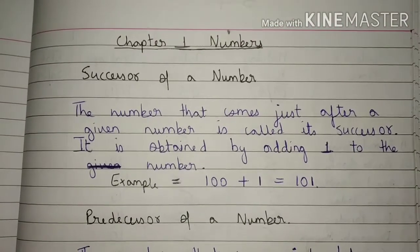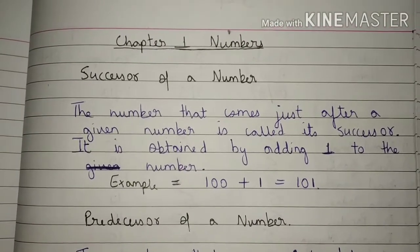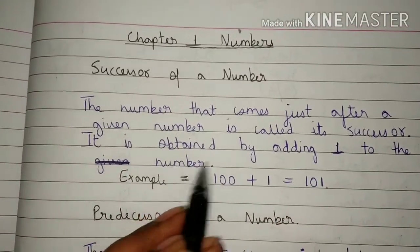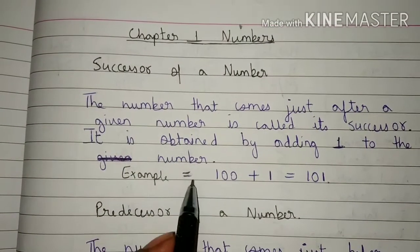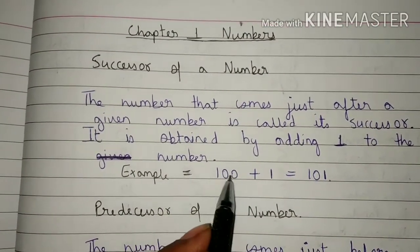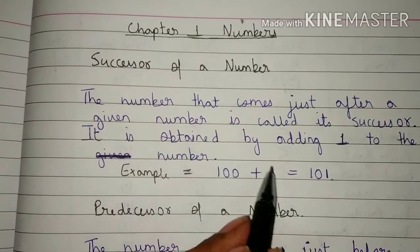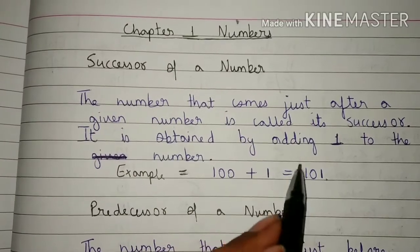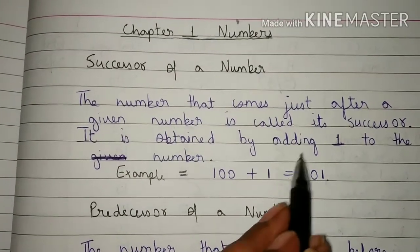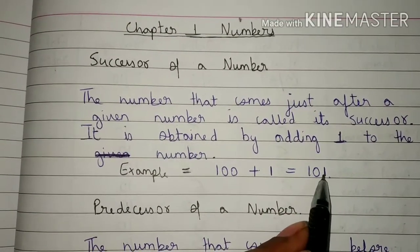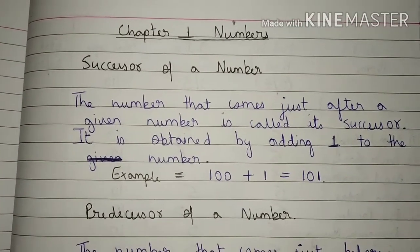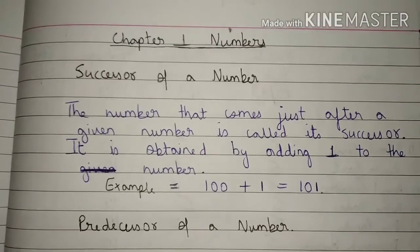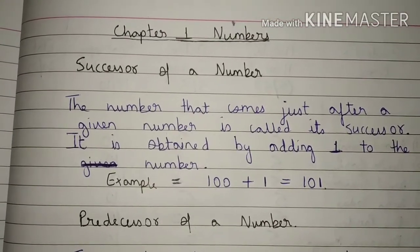If you have to find out the successor of any number, you will always add 1 to the number. For example, if you have to find the successor of 100, you will add 1 to 100. So 100 plus 1 is 101, and 101 is called the successor of 100. Always remember that for successor, you have to add 1 to the number.